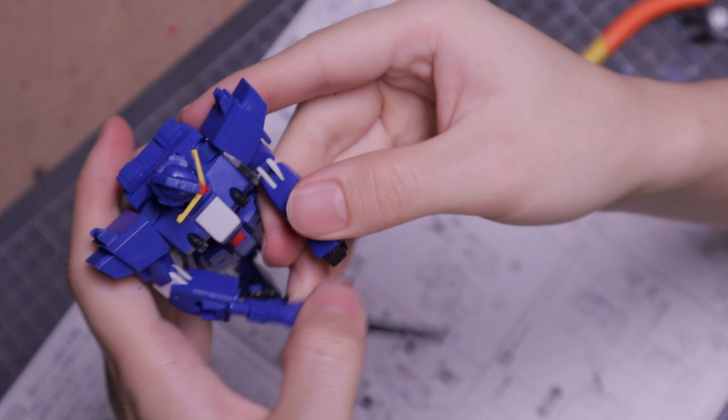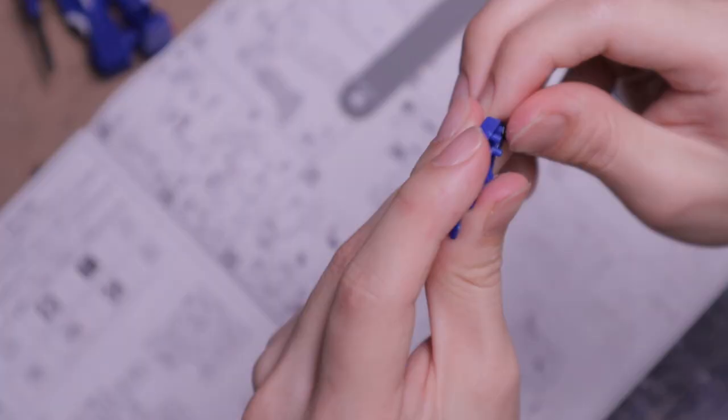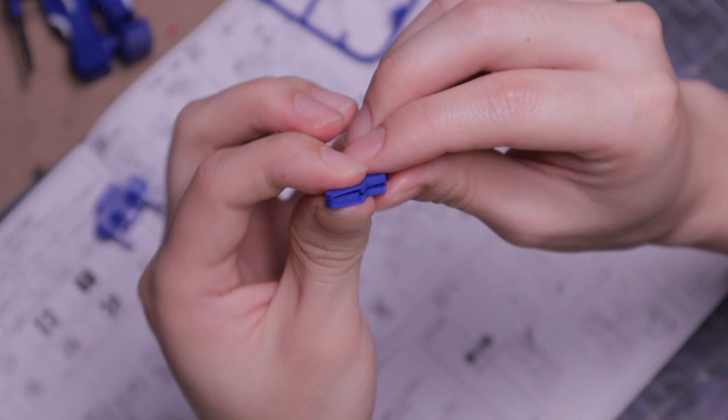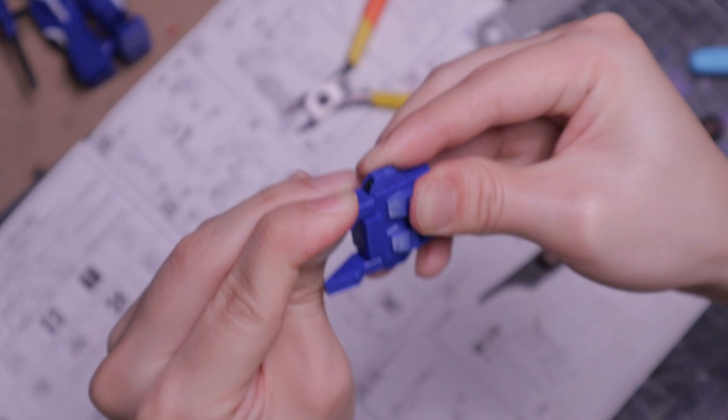Insert four C18s into A14. Cover up with A13. Join A15 and A17 together. Then connect that to the backpack unit. And repeat for the opposite side. Then connect two C20s to the bottom of the backpack. Attach the backpack unit to the Gundam.